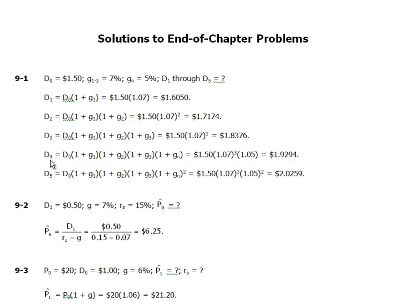You have to be careful when you reach D4, because the growth rate is 7% only in the first three years. In year four it changes from 7% to 5%. So D4 = 1.5 × 1.07³ × 1.05. Then D5 has to be 5% higher than D4, so D5 = 1.5 × 1.07³ × 1.05².